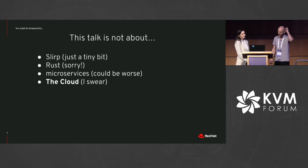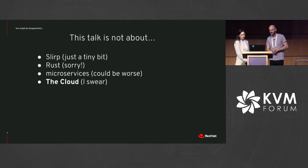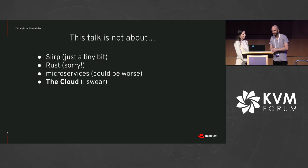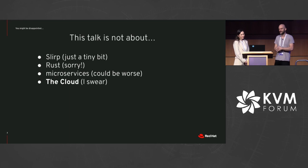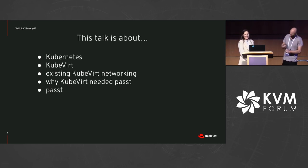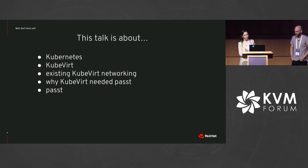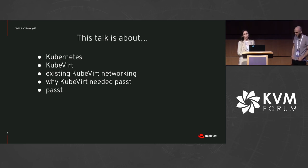This talk is not what you might expect, so let's reset expectations. It's just a tiny bit about Slirp. It's not about Rust, I'm sorry. It's also not about microservices — it could be worse. And it's not about the cloud, I swear. It is a bit about what Kubernetes is, what KubeVirt is, and we'll explain the existing KubeVirt networking approaches, why those weren't enough, and why we needed a new approach: Passt.